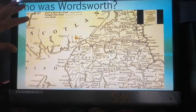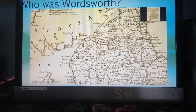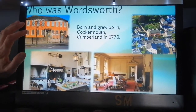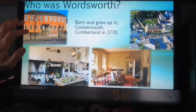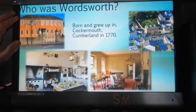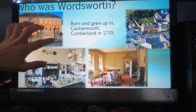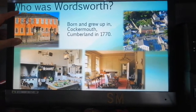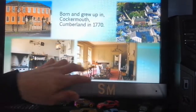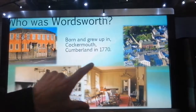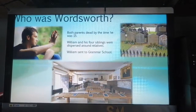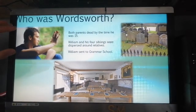Starting with the question: who was William Wordsworth? He's one of my favourite poets in the anthology. He came from not far from where I come from actually — he was born and grew up in Cockermouth in Cumbria, then Cumberland, in 1770. Here's the house he was born in; quite a privileged upbringing you might imagine looking at the houses on the high street. Inside it's a museum today — they've preserved it just as it would have been in Wordsworth's time.